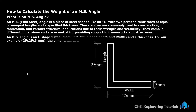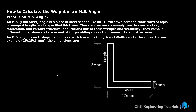An MS angle is an L-shaped piece with two sides — length and width — and a thickness. MS angles come in various dimensions, but we will focus on an angle with the dimension of 25 x 25 x 3 mm. This means both sides of the angle are 25 mm and the thickness is 3 mm.